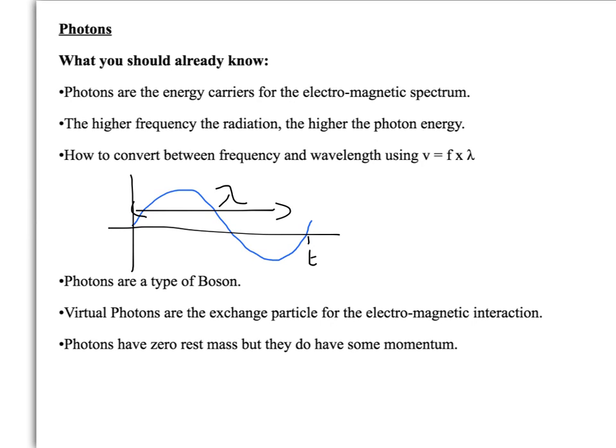And frequency is going to be the number of waves per second, which is going to be one over the time for one wave. And then v in this case is going to be, because they're electromagnetic waves, it's going to be c, or the speed of light.